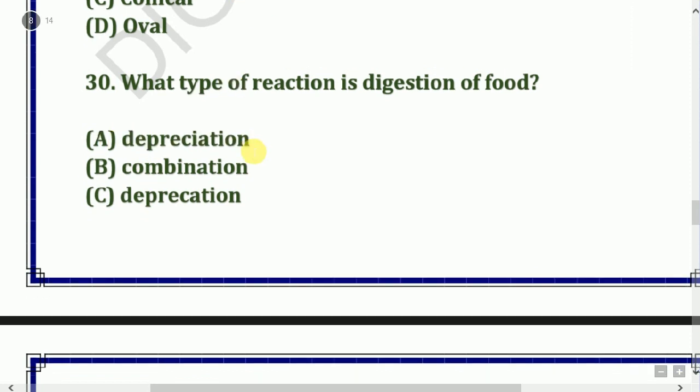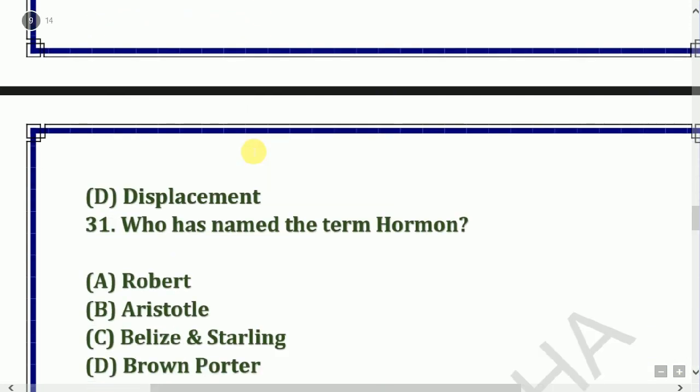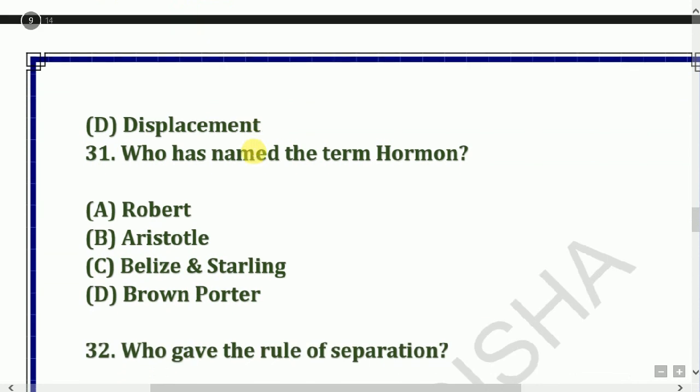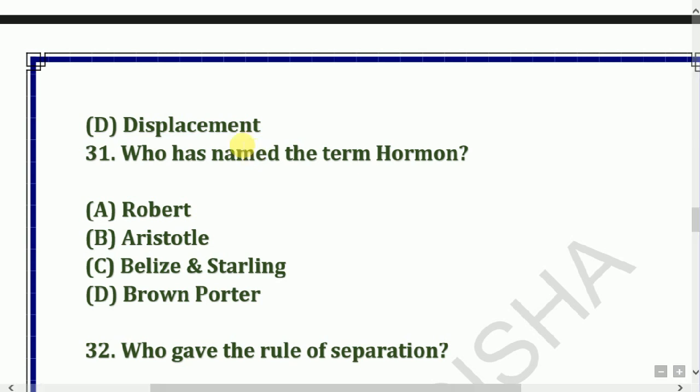Next question: What type of reaction is digestion? Next question: Who named the term 'hormone'? Options: Robot, ice turtle, Bayliss and Starling, or others. The answer is Bayliss and Starling.